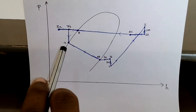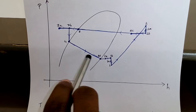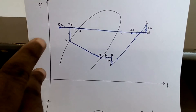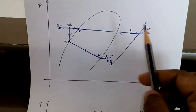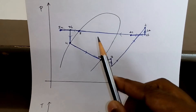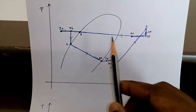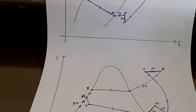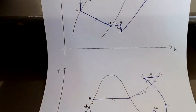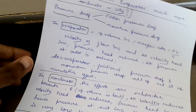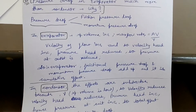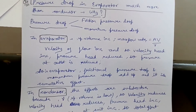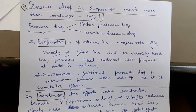The first key point: there is a much larger pressure drop in the evaporator from 4 to 1b compared to the condenser, where the pressure drop from 2c to 3b is much smaller. The question is: why does this happen?